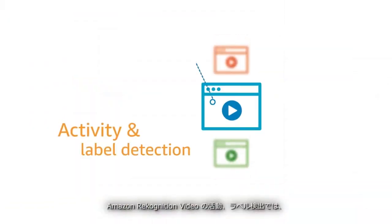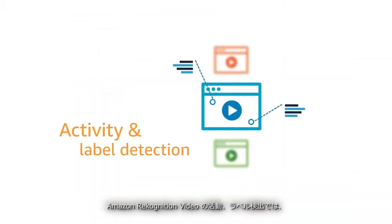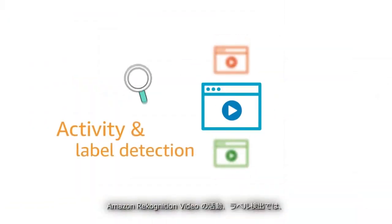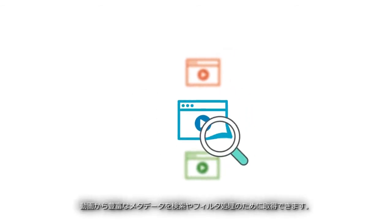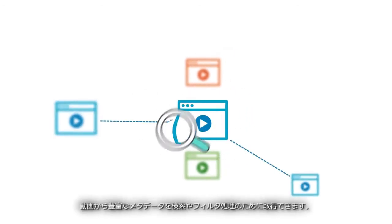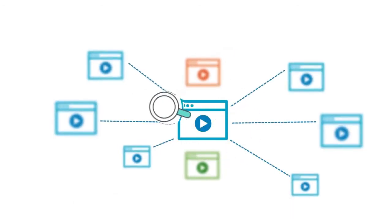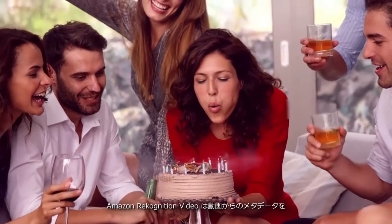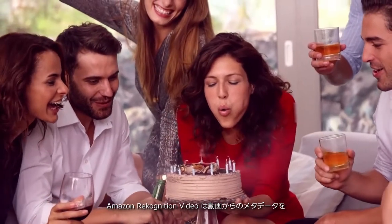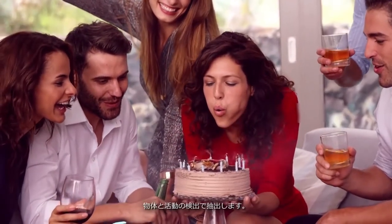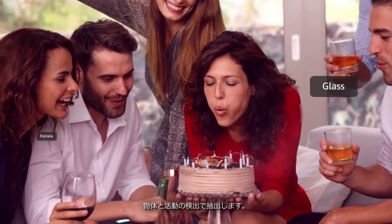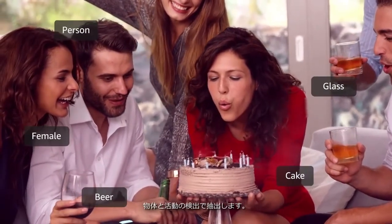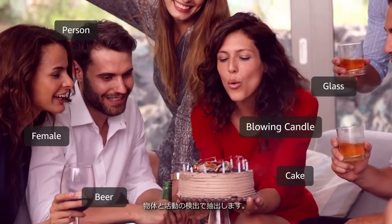Amazon Rekognition Video's activity and label detection provides customers with rich metadata from video for search and filtering. Amazon Rekognition Video extracts metadata from video by detecting objects and activities.